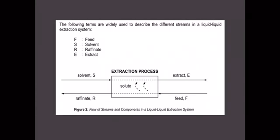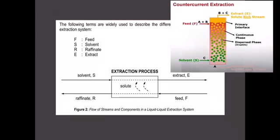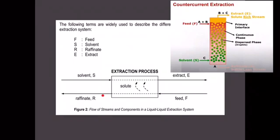The following terms are used to describe the different streams in a liquid-liquid extraction system. Feed is the solution which is to be extracted. S, or Solvent, is the liquid which the feed is contacted. Raffinate is the residual liquid mixture from which the solute has been removed. Extract is the solvent-rich product.